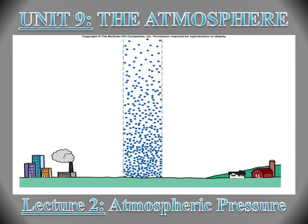Welcome to Lecture 2 of Unit 9 on the Atmosphere. This lecture is about atmospheric pressure, which looks at the pressure exerted by all these little molecules of air — whether nitrogen and oxygen atoms, carbon dioxide molecules, or even some of those trace elements and particulates we talked about in the last unit — and how they influence things down here at the surface.